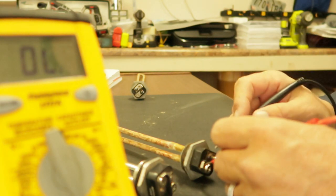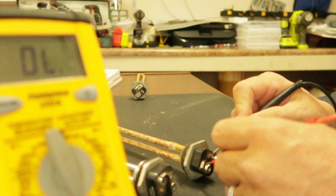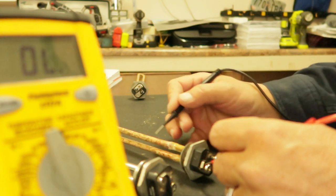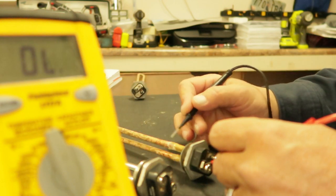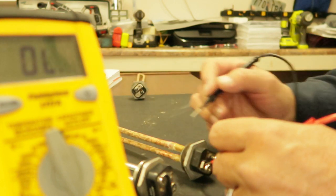First thing I'm going to do is check for resistance and see what that number gives me. It gives me zero. So chances are this element is bad. The element that goes inside of the rod is burnt off inside of there somewhere.